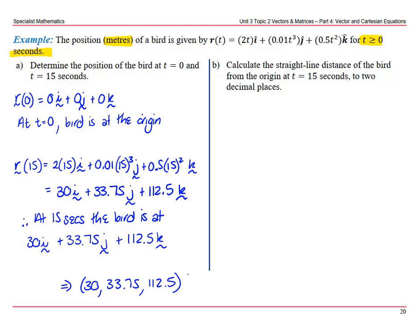Next, calculate the straight line distance of the bird from the origin at t equals 15 seconds to two decimal places. So we have two coordinates, our first was (0, 0, 0), and then our second, which we just found.